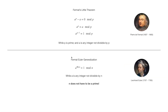When we prove Fermat's Little Theorem, we can move the minus a term to the right-hand side, then divide both sides by a. We get that a to the power of p minus 1 is equal to 1 mod p. In other words, if I divide a to the power of p minus 1 by p, I get a remainder of 1.